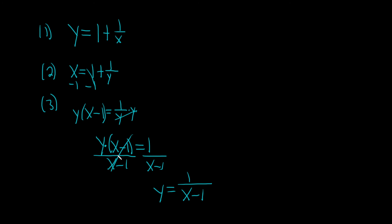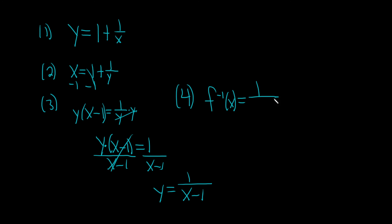So really sneaky — you can end up multiplying out and then not finding it. The last step would be to write it using the proper notation. So f inverse of x is equal to 1 over x minus 1. And that would be the final answer.